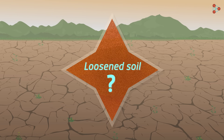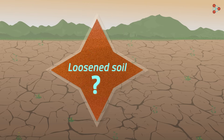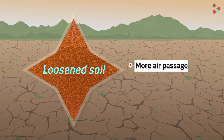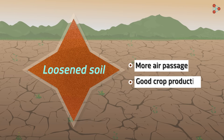Why does soil need to be loosened up before cultivation? The answer is simple. Loose soil will allow more air to pass to the roots of the plants. This will in turn aid the growth of the plant, leading to good crop production.